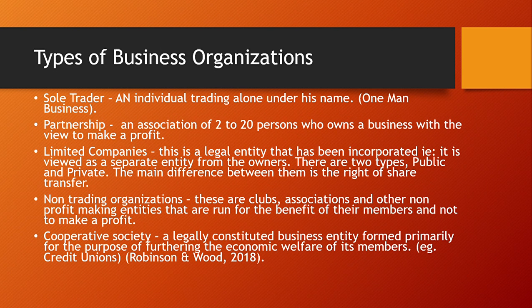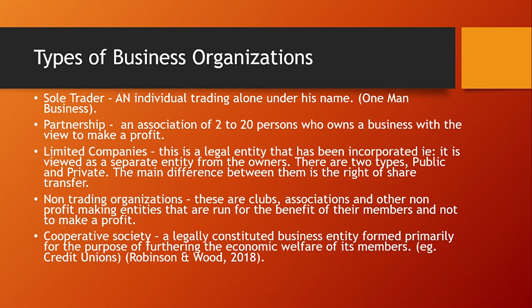Now, types of business organizations. Most of you would know this from POB or economics, but for purely accounting students, you need to be familiar with this. A sole trader is a one-man business — one owner trading alone, normally under their own name. A partnership is an association of two to twenty persons who own a business with the view to make a profit. Limited companies are legal entities that have been incorporated — they are viewed as a separate legal entity from the owners. There are two types: public and private companies.